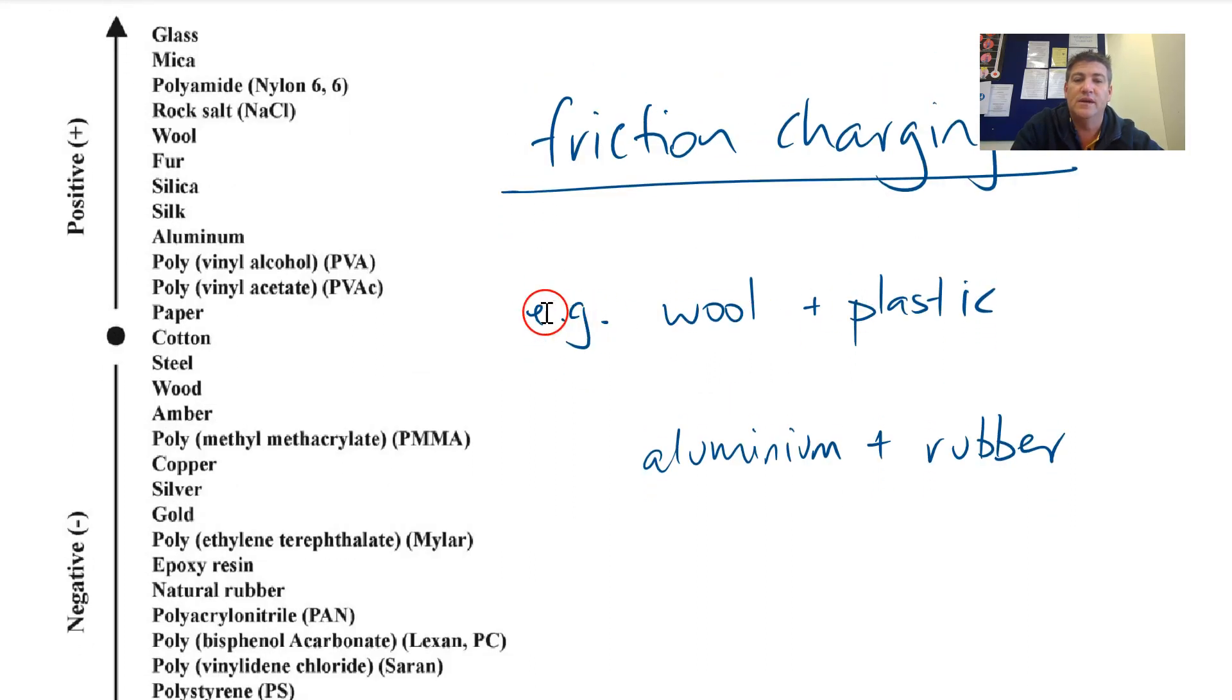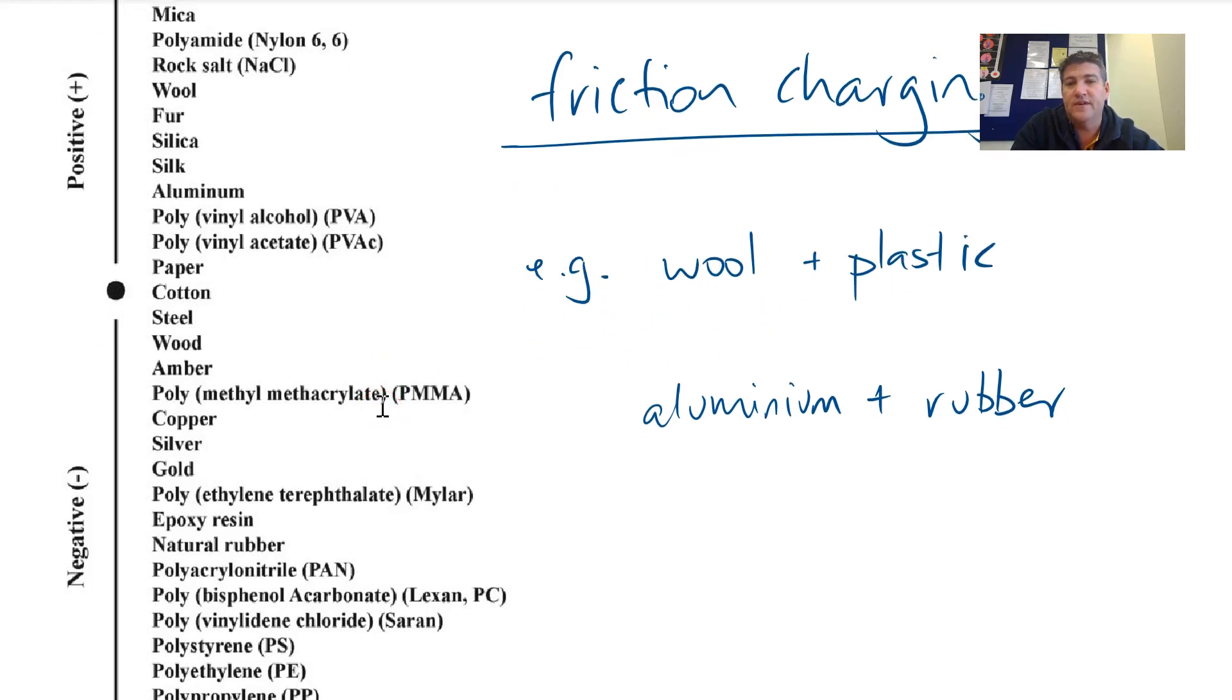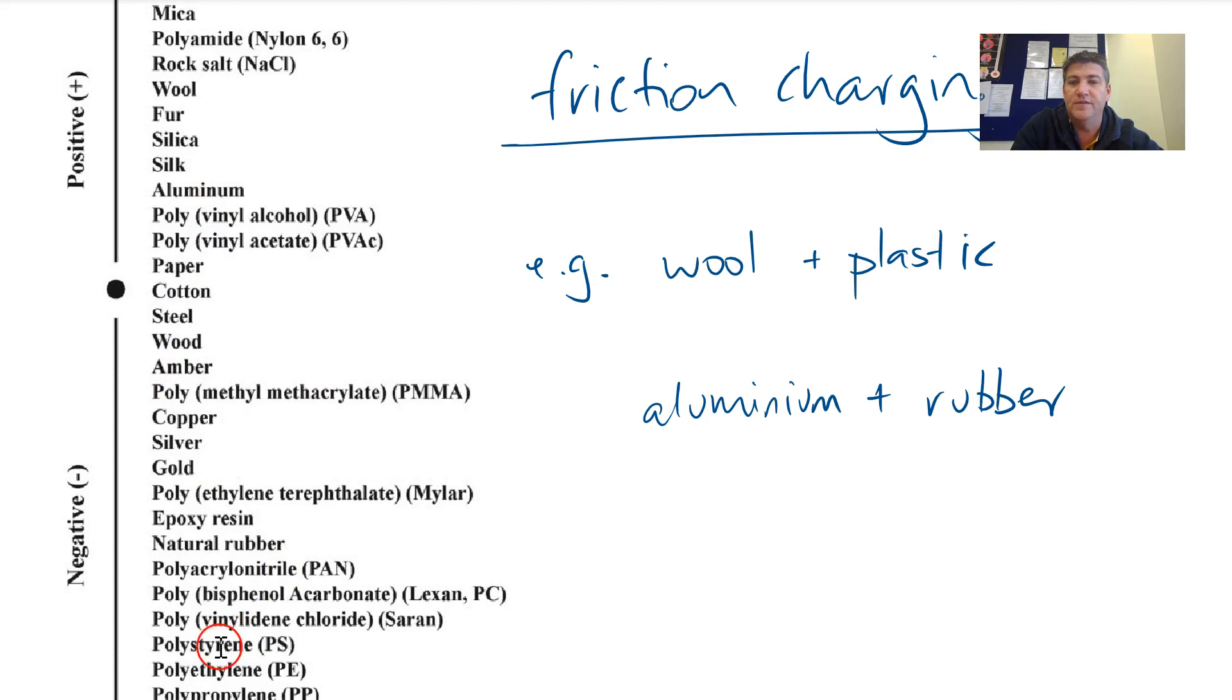So over here we have some examples, for example wool and plastic. So on this table that we can see here, we find where wool is and we can see it's at the top here and it's on the positive end. So what that tells me is that if I rub wool and plastic together, because plastic's down here, all of these poly things, these are all different types of plastics. If I rub wool and plastic together,